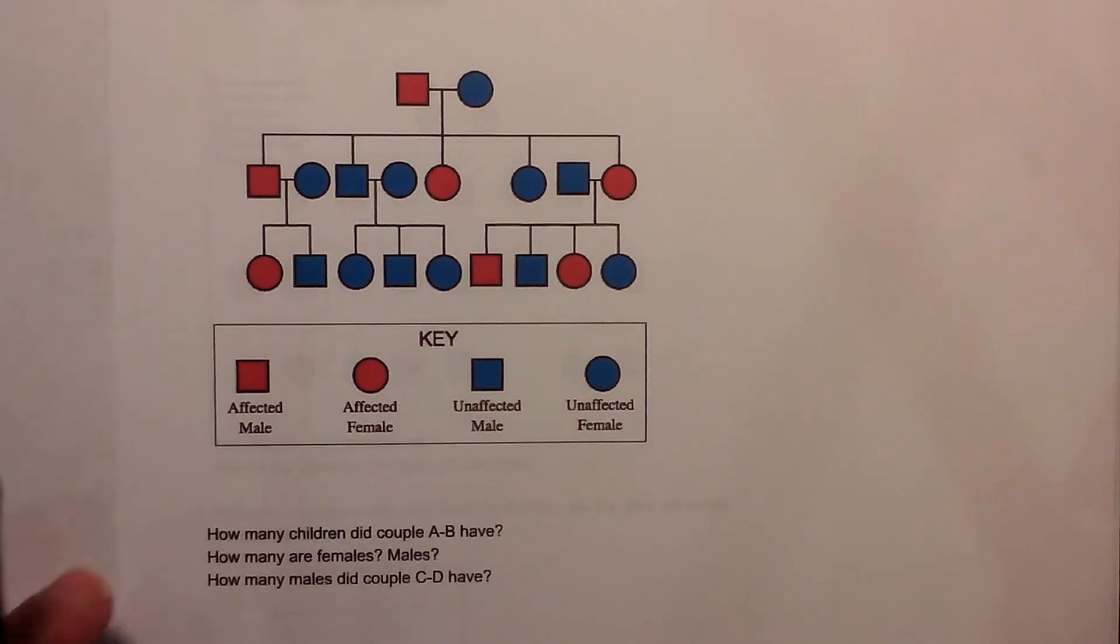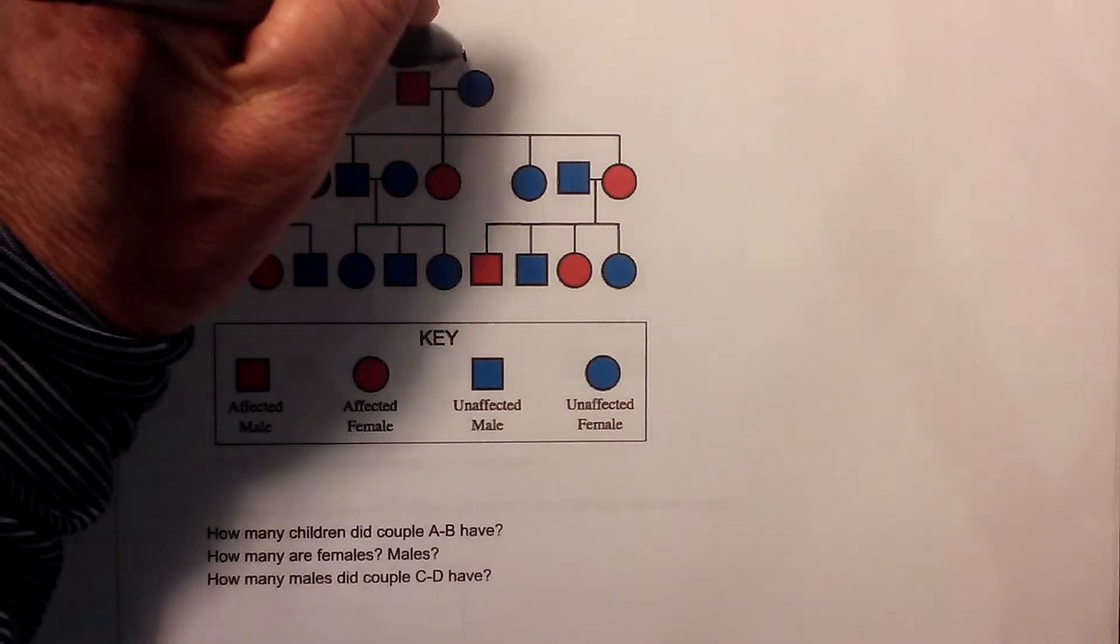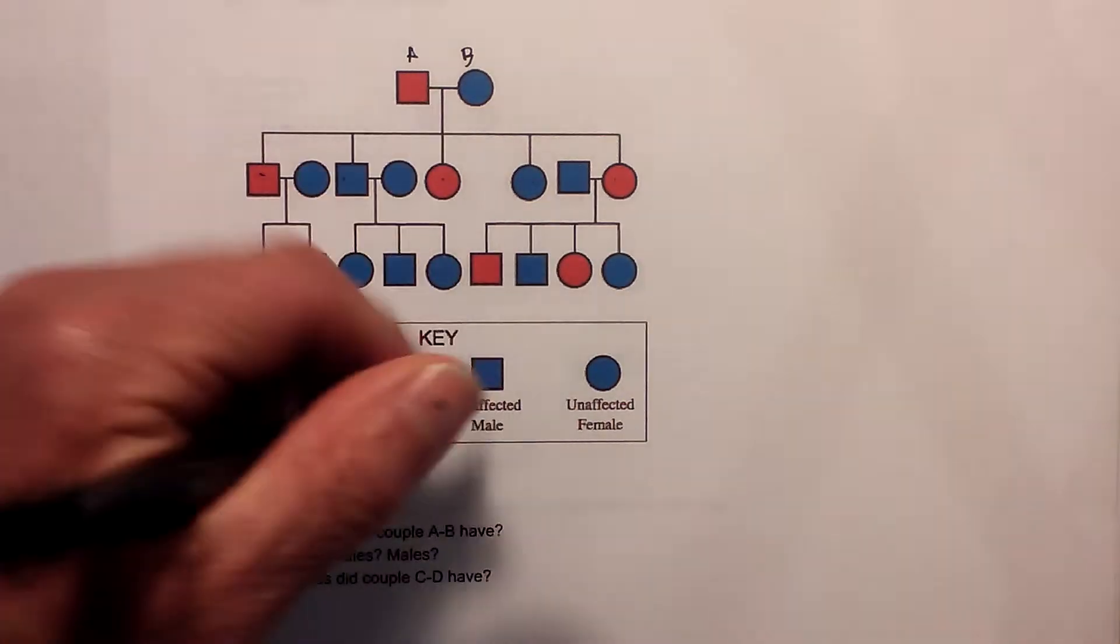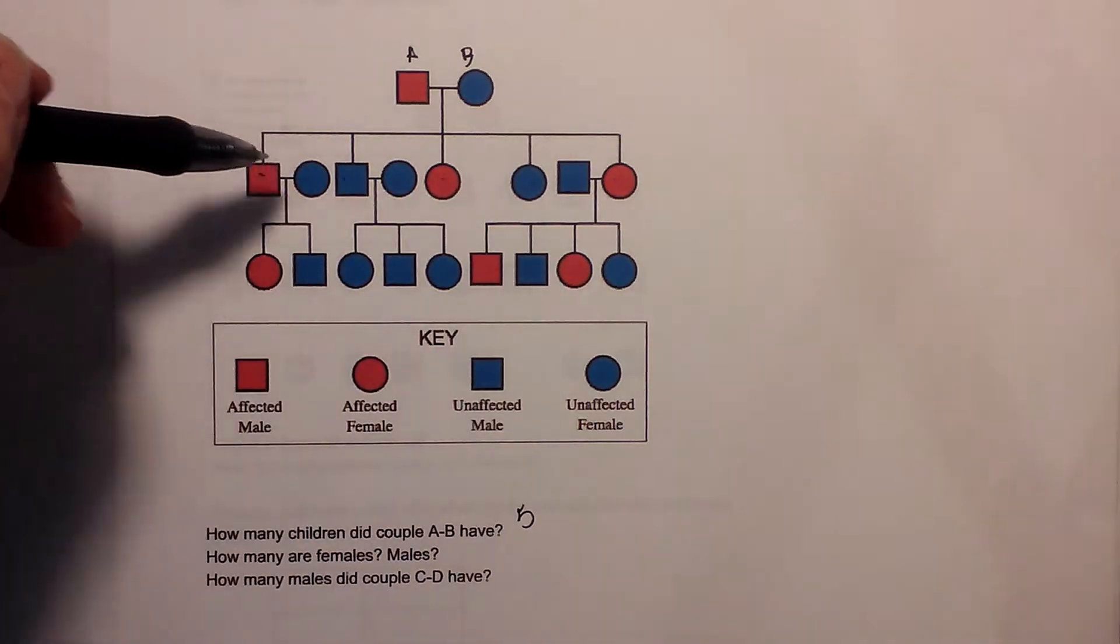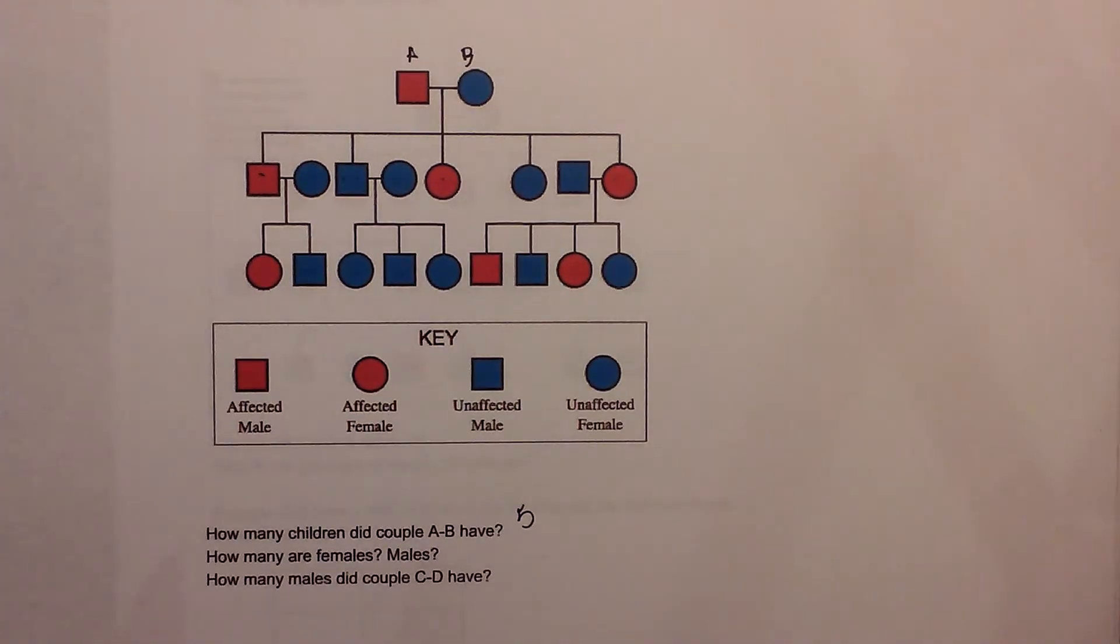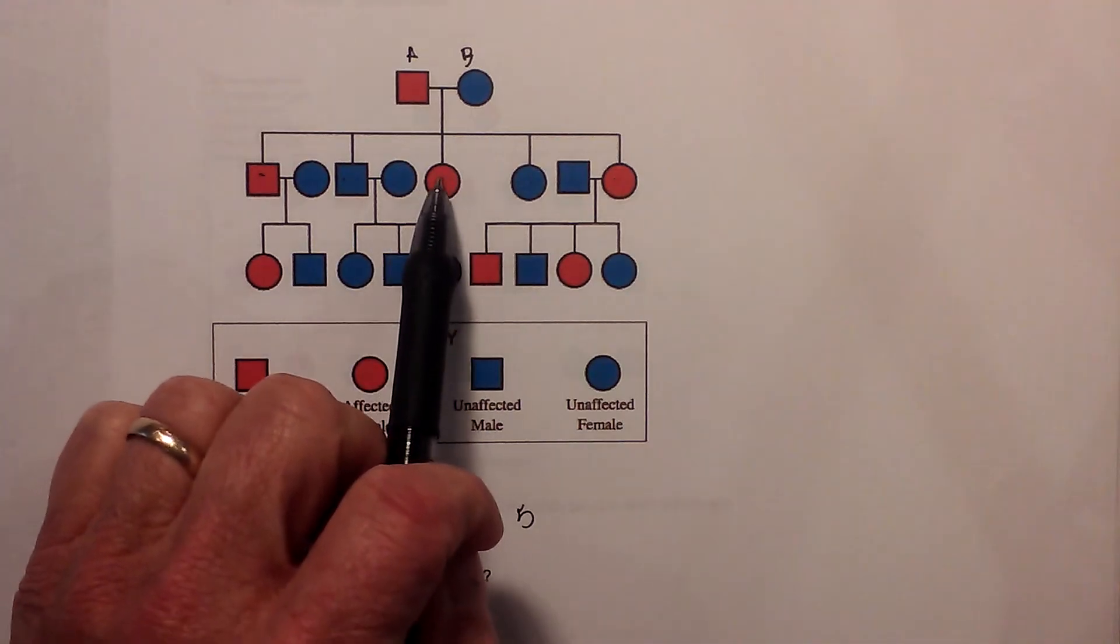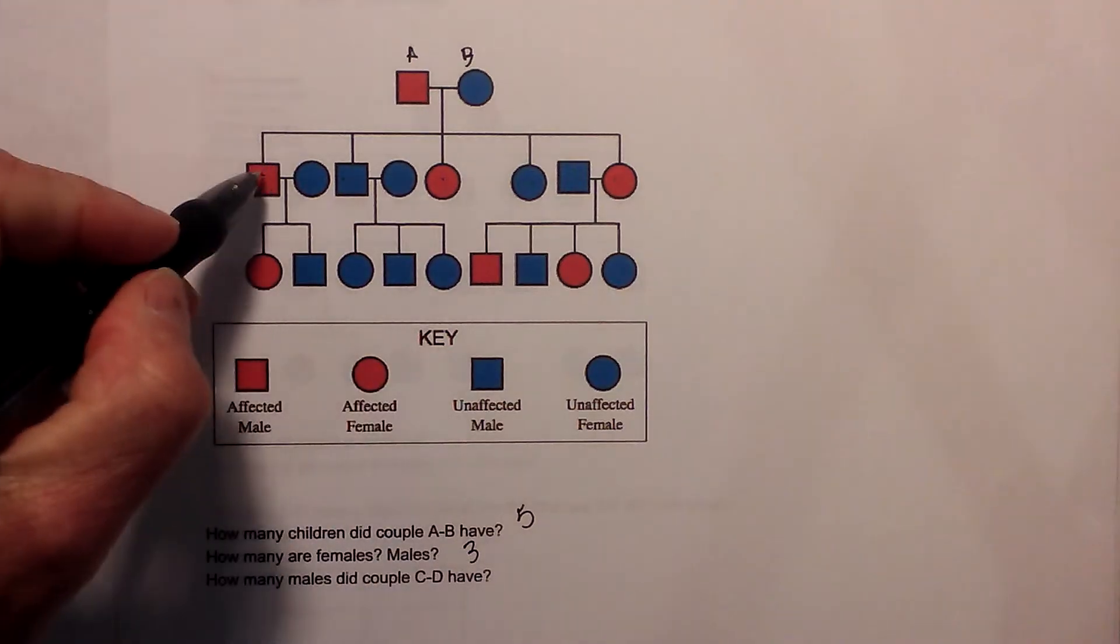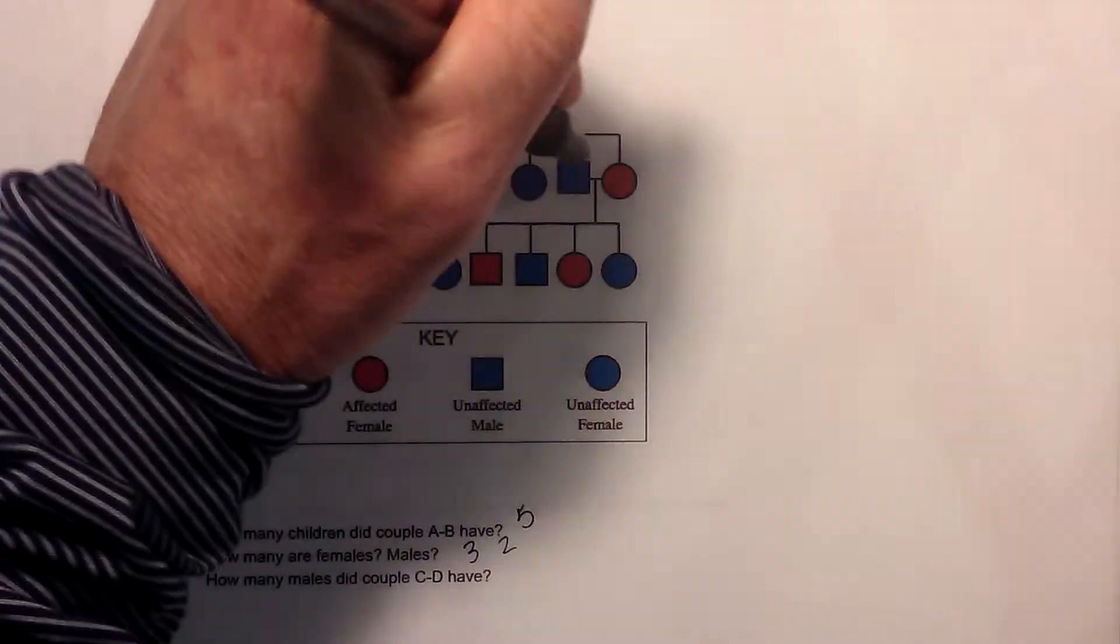So question one asks you: how many children did couple AB have? So this is AB and they have 1, 2, 3, 4, 5. Now how do I know that? Remember, you have a vertical line coming down, you have a horizontal line, and then you have vertical lines again that tell you that the children belong to them. How many are females? Well we have 1, 2, 3 females and we have 1, 2 males.